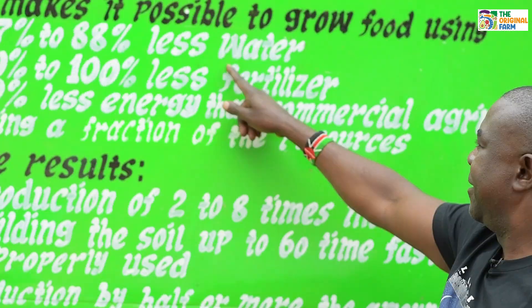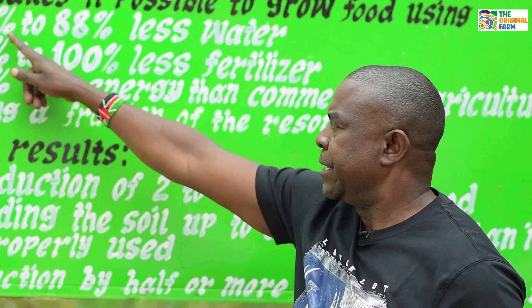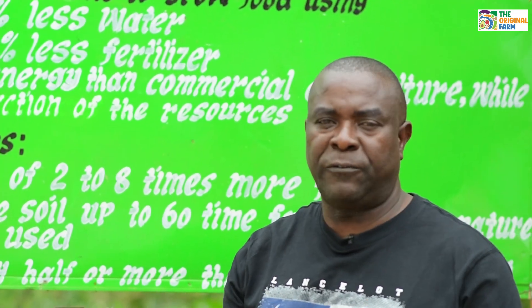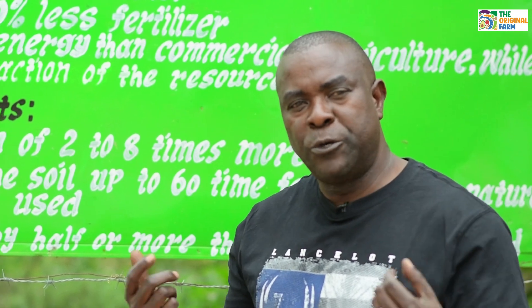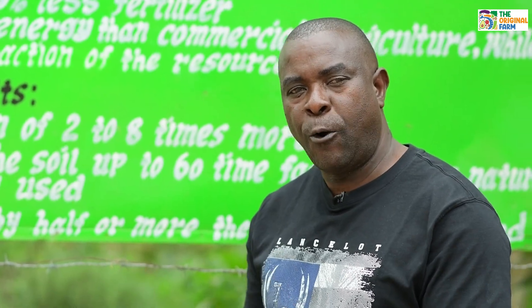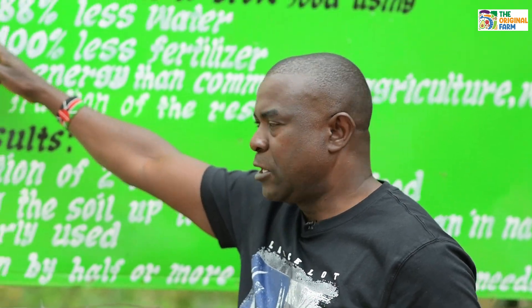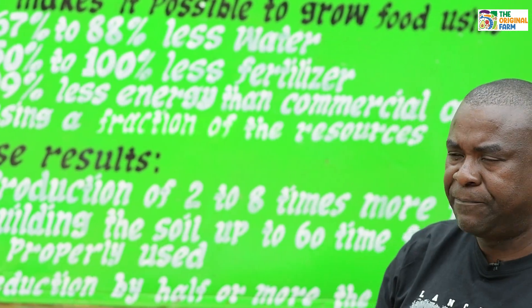If you practice global intensive very well, you will be using 67% to 88% less water compared to commercial or chemical agriculture. Right now we are supposed to be having rain but there is none, so the only option that remains is the global intensive system. Once the soil is fertile and you have applied sufficient compost, you will reduce water usage by 67% to 88%.